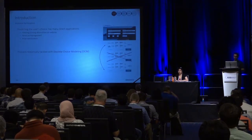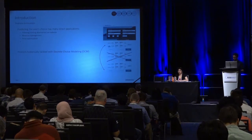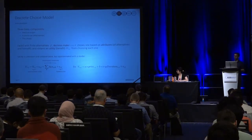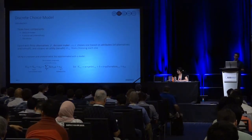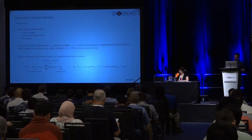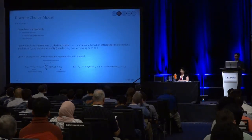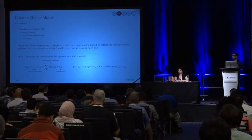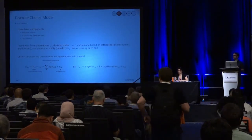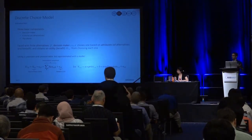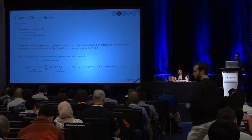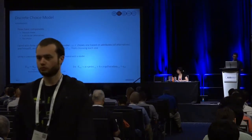Historically in the industry, this has been tackled using what is called a discrete choice model. In this framework, there are three main basic components: the decision maker — the person looking for the flight — the set of alternatives from which they choose, and the final choice, which is only one — in our case, the booking. More formally, faced with a finite set of alternatives, the decision maker will choose one based on attributes of both the alternatives and themselves, obtaining a certain utility or benefit from each. The idea is that they will choose the one that gives them the most benefit. This utility is unknown and unobservable, but it can be approximated with a model. Usually we have a representative utility term V and some random error, and this representative utility is expressed with a simple linear model — for example, depending on price and trip duration.